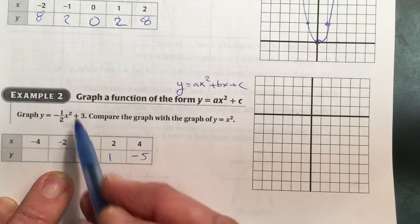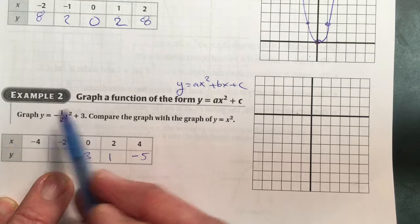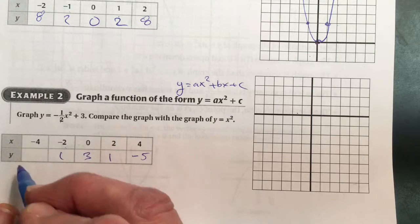Very quickly, if I go this way, negative 2 squared is still going to be 4. Divided by 2, it's going to be the same answer. So 1 and negative 5.